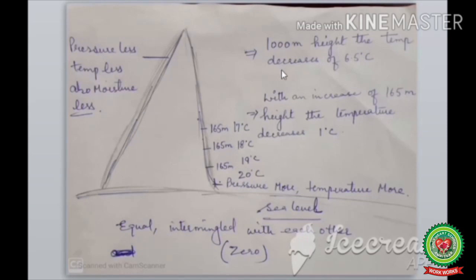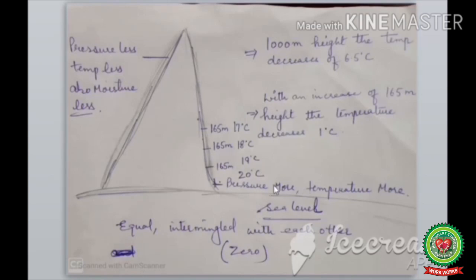The temperature decreases with altitude at the rate of 6.5 degrees Celsius for every 1000 meters. When you go higher, with the increase in height, temperature decreases. There is a relation between pressure and temperature — when pressure is more, temperature is also more. Pressure is higher at the surface near the earth, but as we go up, pressure decreases, and with the decrease in pressure, temperature also decreases. This is called the lapse rate.